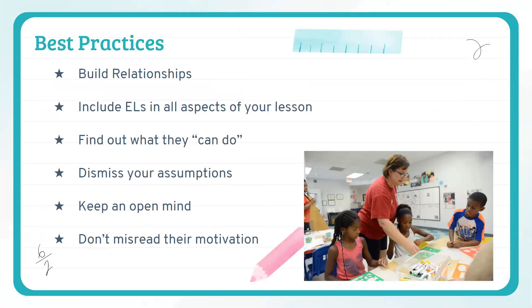Here are a few things to consider. The most important thing when working with any students is to build a strong relationship with them. Get to know them — find out what interests they have, find out information about their family, and be interested in the students in your classroom. In all situations possible, include your ELs in all aspects of your lesson. When we talk about WIDA, the WIDA model is built on the can-do philosophy — we always want to find out what students can do. Dismiss your assumptions. We all come to the table with our own unique perspectives, and we must step back and ask: are there any misconceptions or assumptions I have when working with a student? That is, in part, keeping an open mind.